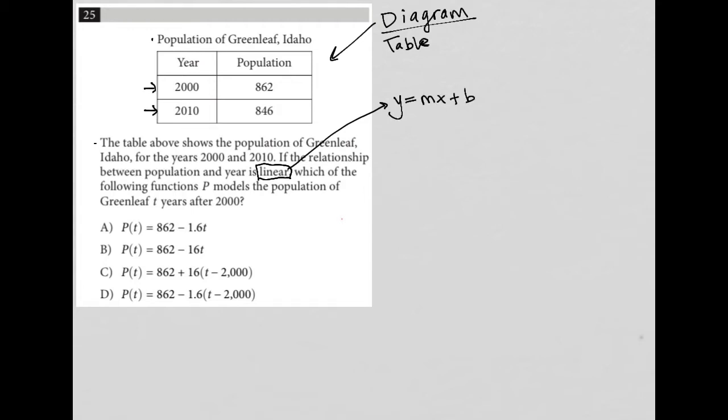Which of the following functions P models the population of Greenleaf t years after 2000? So if P is the population. And t is the number of years or time.